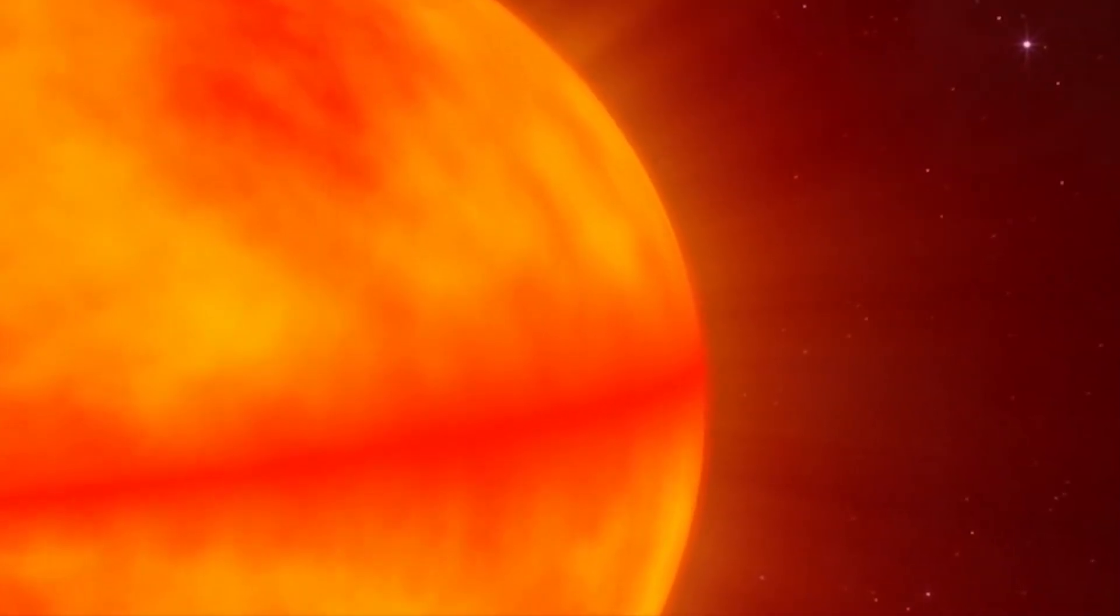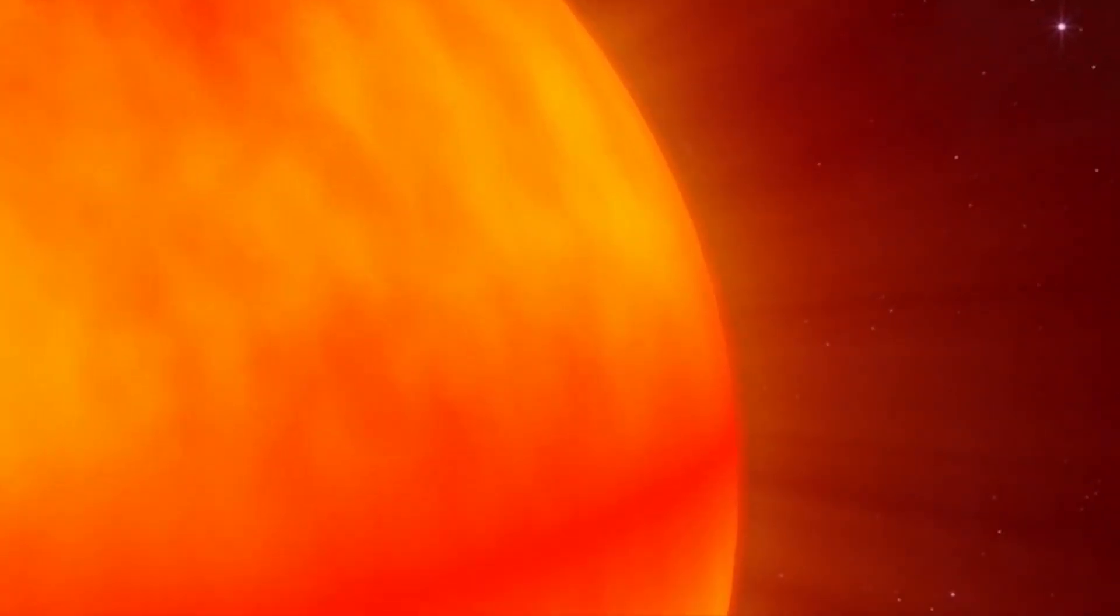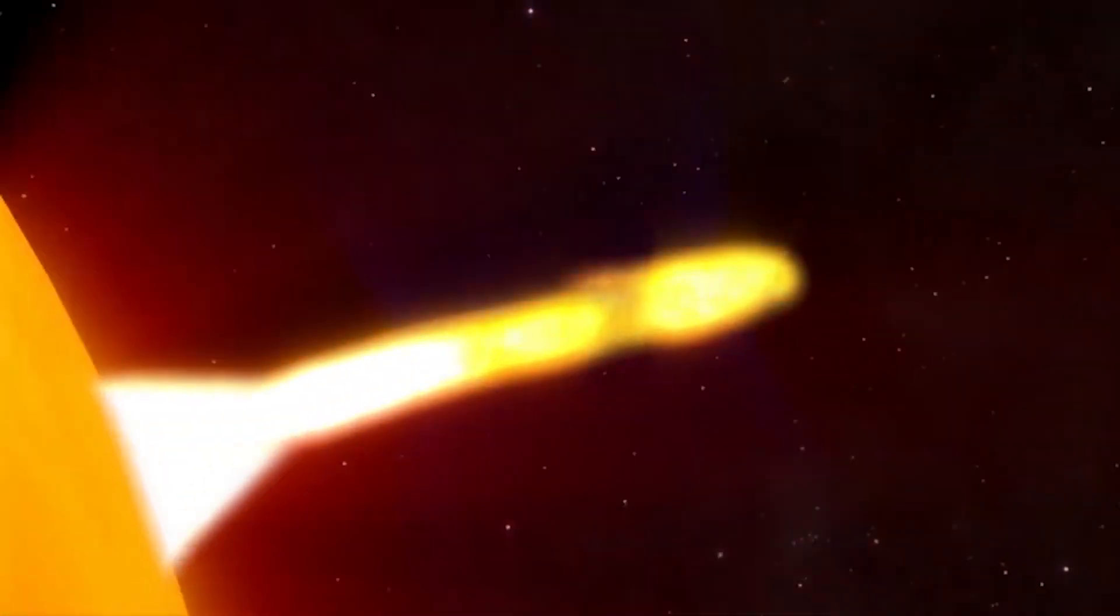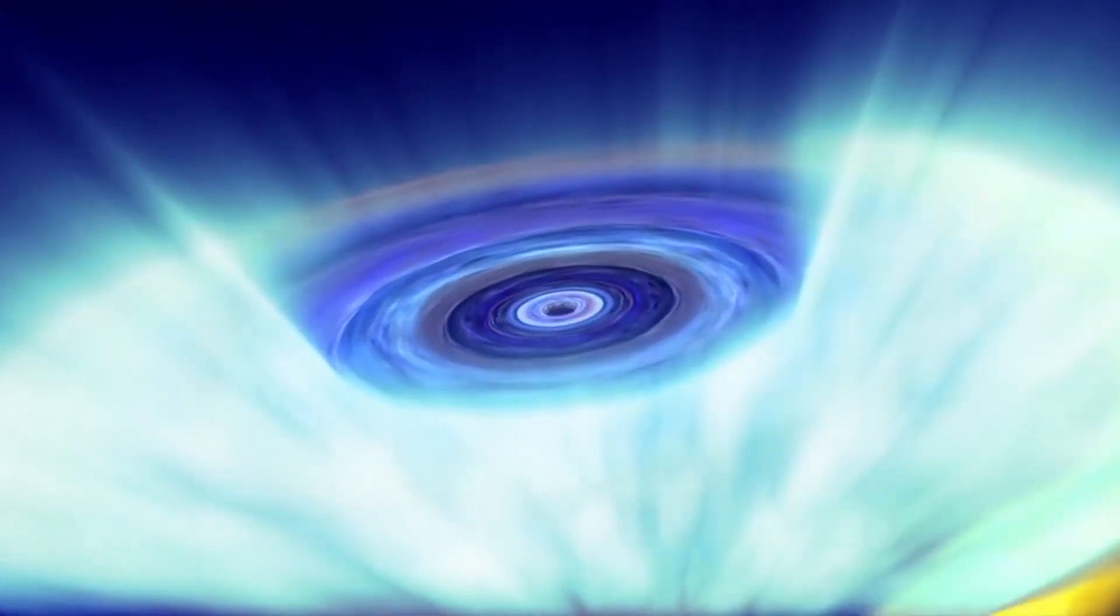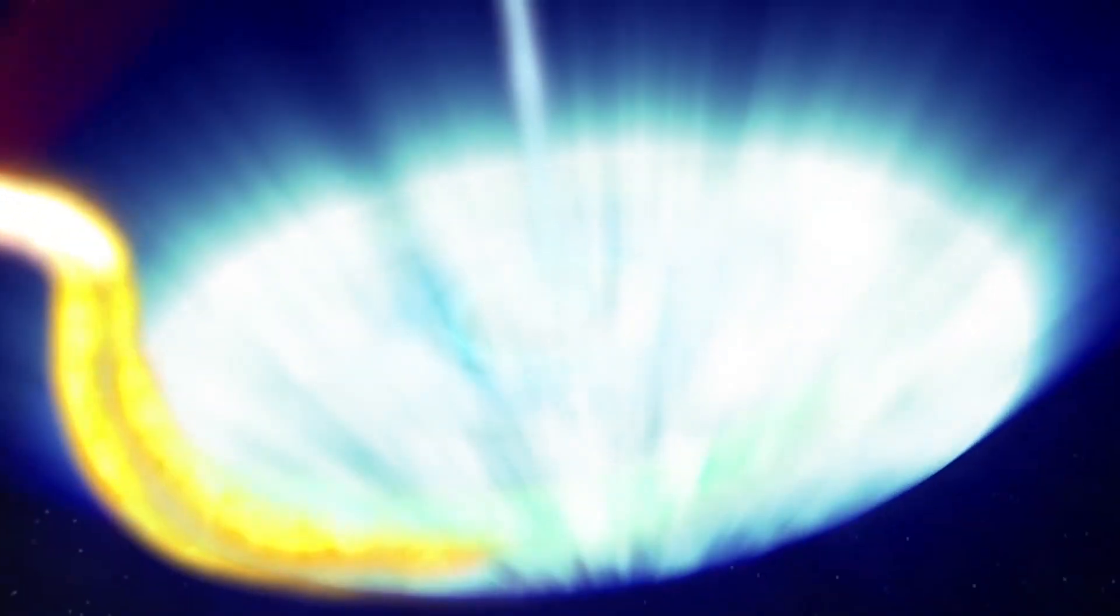V404 Cygni is eating its companion star, an early red giant slightly smaller than our sun. The black hole is slowly devouring this red giant, and the material being siphoned away from the star is orbiting the black hole in the form of an accretion disk, which looks a bit like water circling a drain.